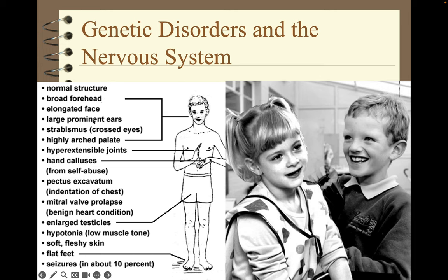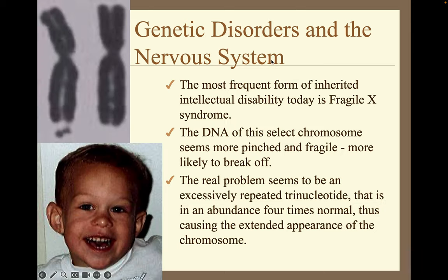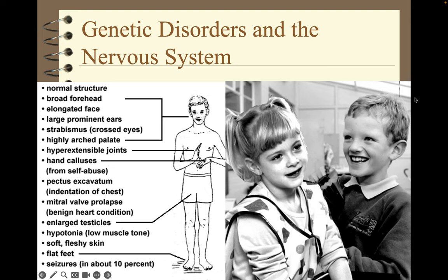Individuals with fragile X have characteristic features including a broad forehead, elongated face, large prominent ears, strabismus (crossed eyes), a highly arched palate, hyperextensible joints that pop out from time to time, hand calluses from rubbing their hands together, pectus excavatum (an indentation in the chest), mitral valve prolapse (a benign heart condition), and in males enlarged testicles. They also have hypotonia, low muscle tone, soft fleshy skin, flat feet, and about 10% will have epilepsy. Shown here is a brother and sister who both have fragile X.